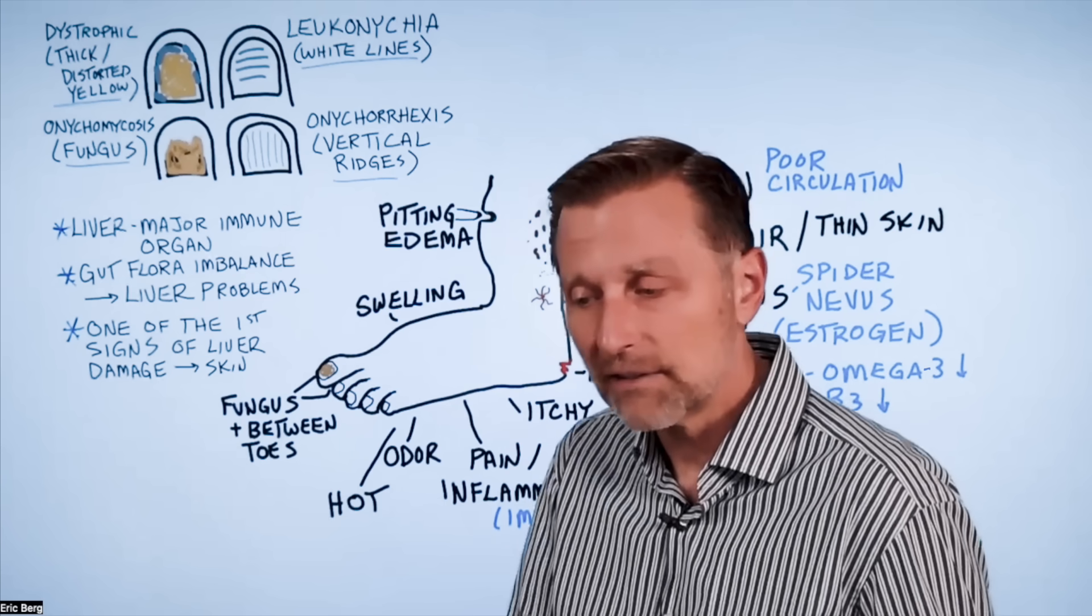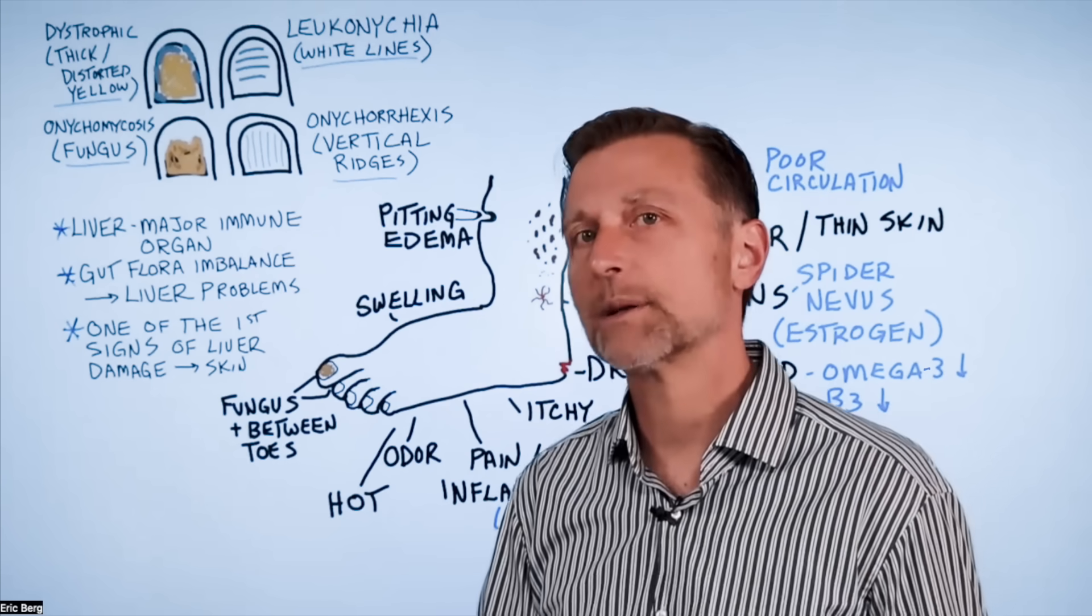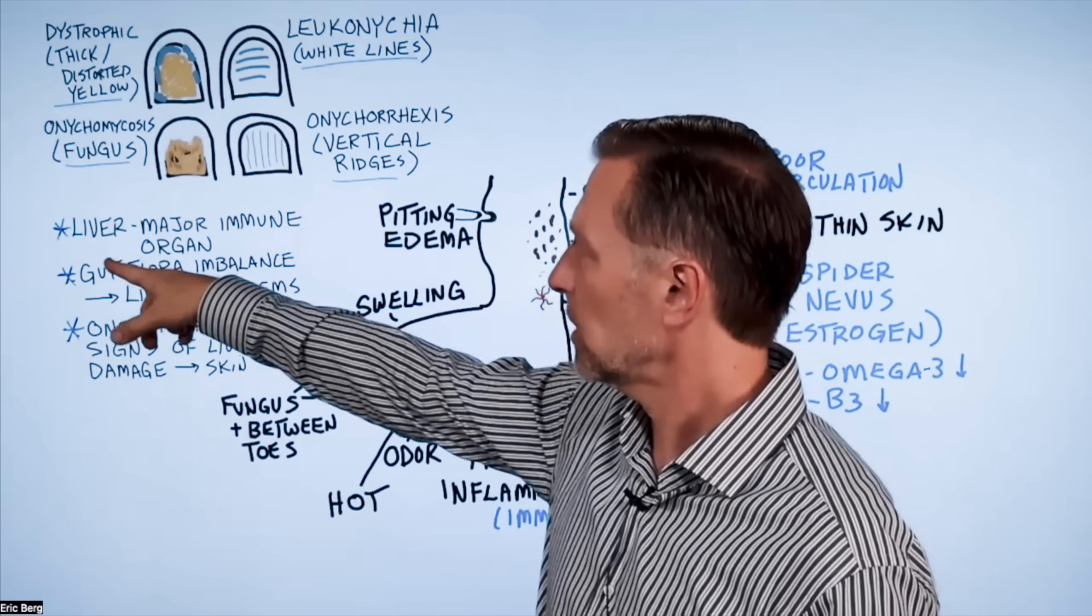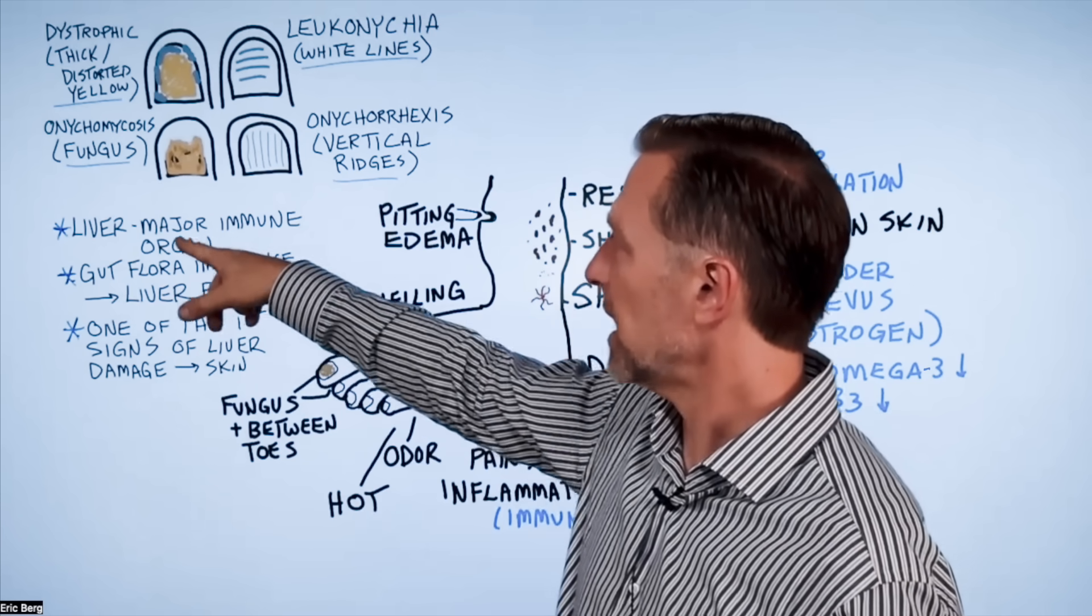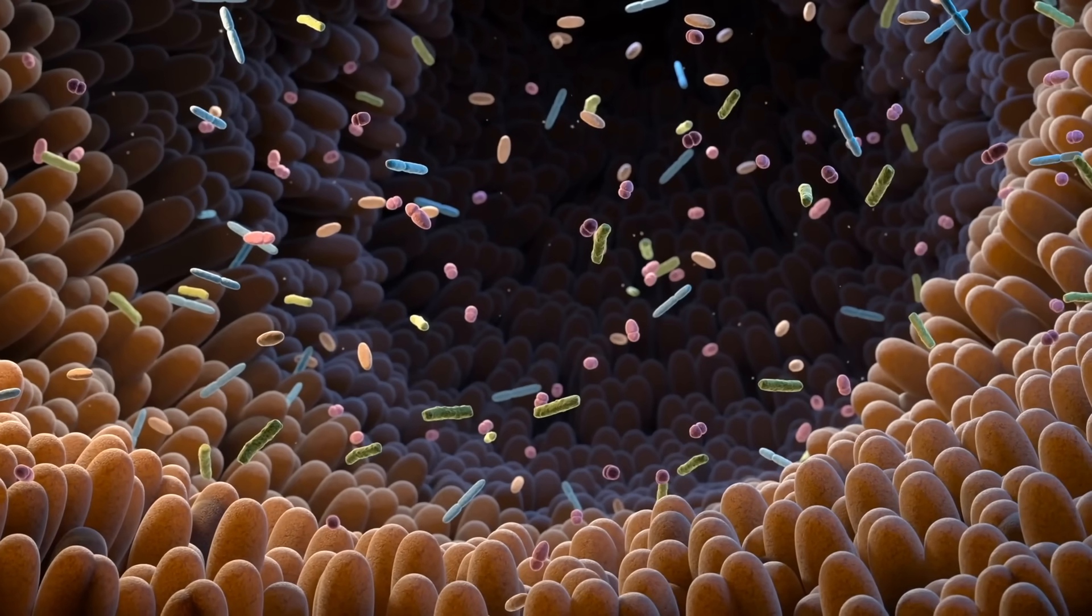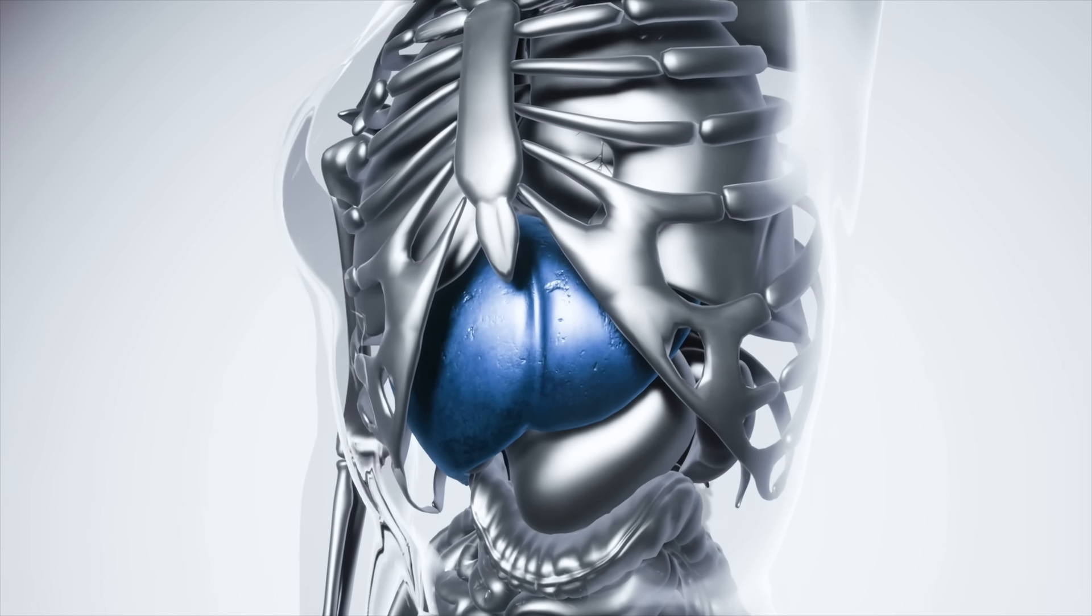So as you can see, there's a lot of little clues that you can get by looking at someone's foot. Of course, if you're doing this in public on someone's foot, don't mention my name. A couple little points. Liver is a major immune organ. Number two, the gut flora imbalance. If there's any type of imbalance in your good bacteria, that can make the liver worse.